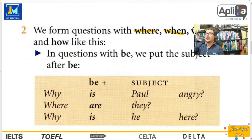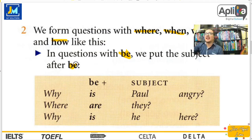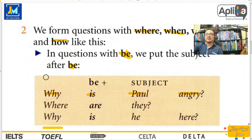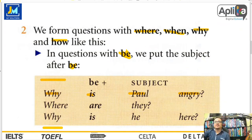Formamos preguntas con where, when, why and how de esta forma. Con las question words, muchos me preguntarán: profesor, ¿dónde está what?, ¿dónde está which? Bueno, esa es la siguiente clase. Las question words siempre irán primero. Luego el verbo to be, luego el sujeto, y finalmente el complemento predicado. Por ejemplo: Why is Paul angry? ¿Por qué está Paul enojado? La estructura es: question word primero, luego to be, luego el sujeto.